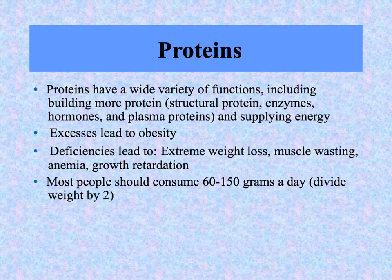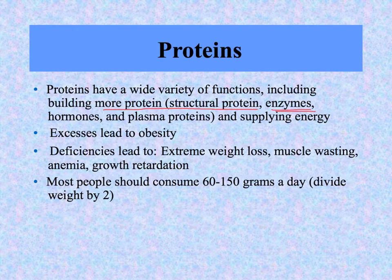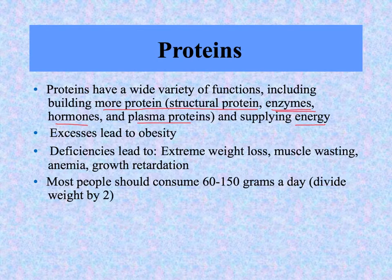Moving on to proteins — the third major energy-supplying nutrient. Protein has a very important role in providing the structure of our bodies. We are made up of protein in the connective tissue and various cells. Enzymes are specific proteins that cause metabolic processes to happen as catalysts. Hormones are proteins sending signals all over the body. Plasma proteins are involved in the immune system and help regulate osmotic pressure to bring fluid back into the capillaries from the interstitial space. Protein can also provide fuel for the body. Too much protein can lead to obesity; not enough can lead to weight loss, muscle wasting, anemia, and growth retardation.